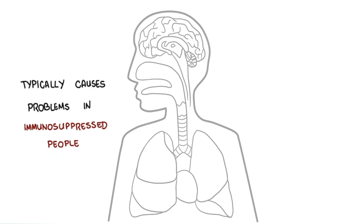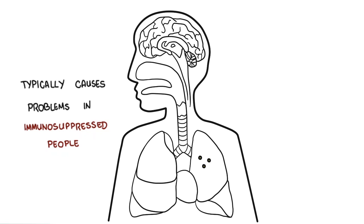So to summarize, Cryptococcus neoformans infection typically causes problems in immunosuppressed people. They cause either a lung problem or a brain problem. Treatment is with antifungals. Thank you for watching.